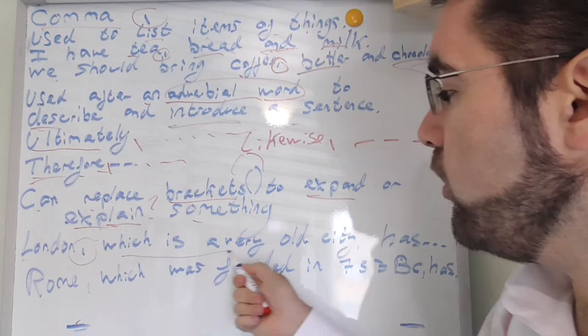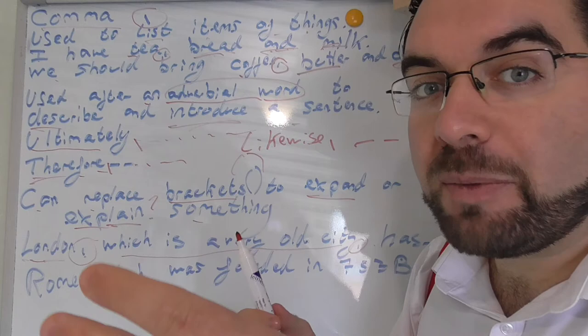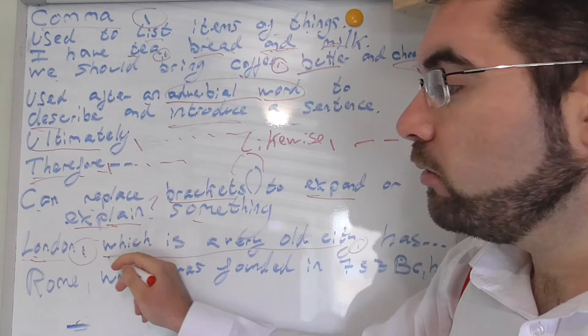So we could say, London, comma, which is a very old city, comma. So like we're saying London and opening a comma, and we're talking about it. It's just to add some more information to explain something which might be relevant or important or referenced again later on.